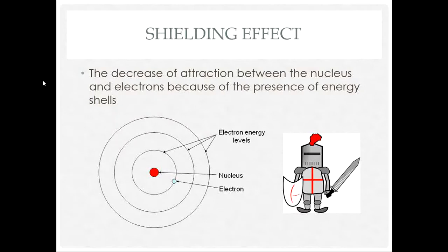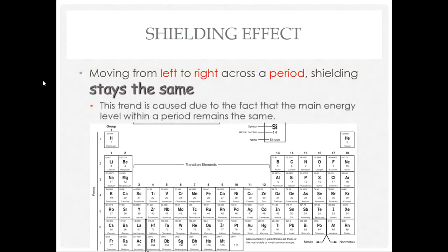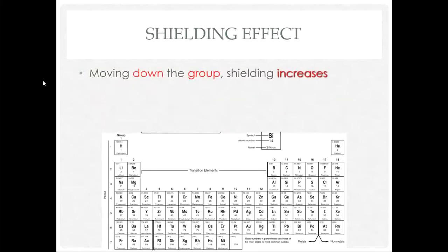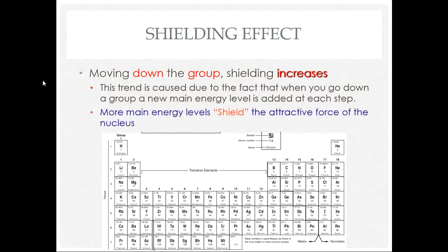Shielding effect is the decrease of attraction between the nucleus and electrons because of the presence of energy shells. As you go left to right across a period, shielding stays the same because the main energy level stays the same — you're in the same period with the same number of shields. As you move down a group, shielding increases because you're adding more main energy levels, which decreases the attractive force the nucleus has on its valence electrons.